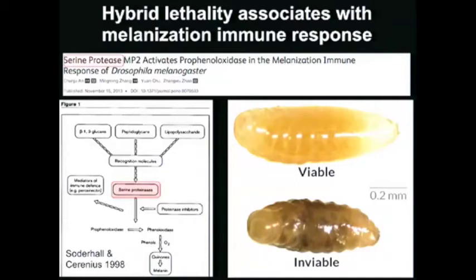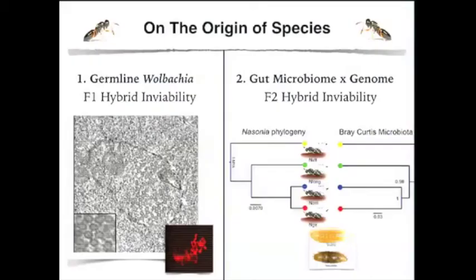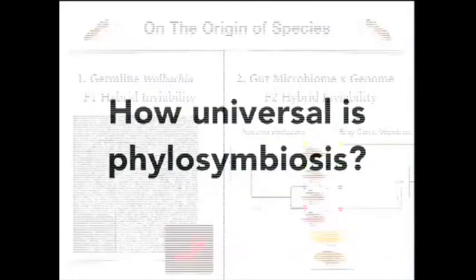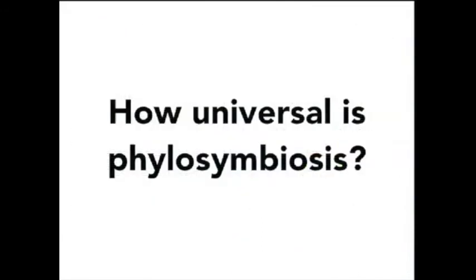We're going to knock down the serine proteases and in theory should be able to rescue inviability even when those hybrids have an altered microbiota — just like we did with the microbiome, we should be able to do the same thing with the genome. In Nasonia, we have an F1 case with Wolbachia and an F2 case with gut microbes — different sets of microbes causing severe cases of mortality. The question is whether we're just getting lucky with Nasonia, or whether it's a more common phenomenon that just requires investigators to look at the microbial side when studying the origin of species.